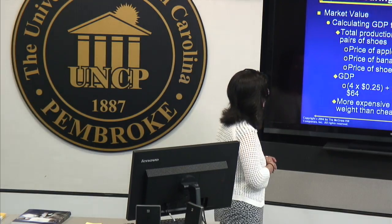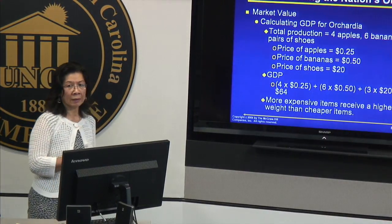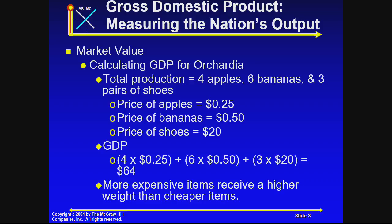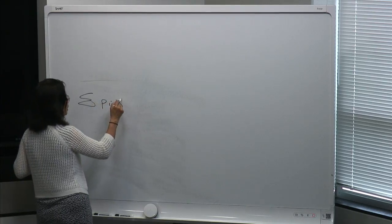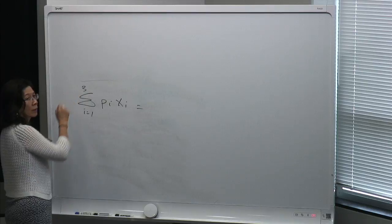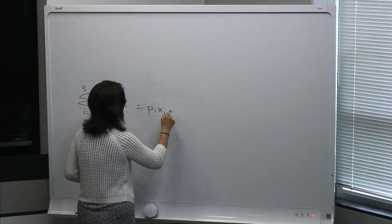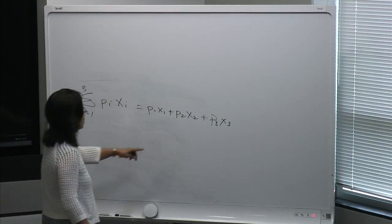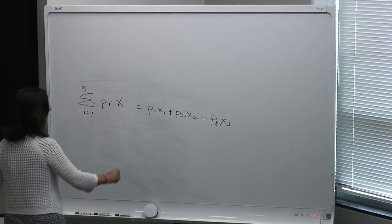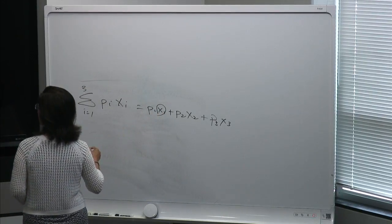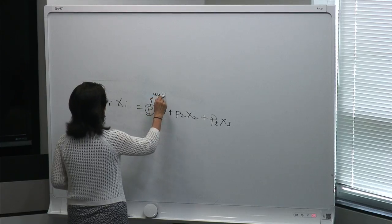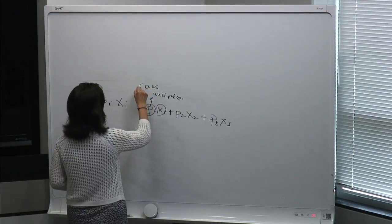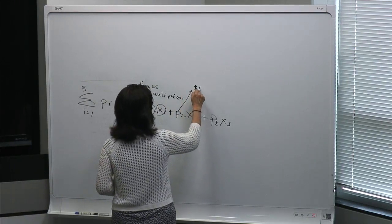To calculate market value, let's look at this example: how to calculate GDP for Orchard Deer, a fictitious country. The total production consists of three products: four apples, six bananas, and three pairs of shoes. The equation is a summation of p_i times x_i, for i equals one to three items. So it's p1·x1 + p2·x2 + p3·x3. The price of apples p1 is 25 cents, p2 the price of bananas is 50 cents, and p3 the price of shoes is 20 dollars.